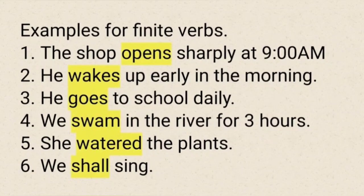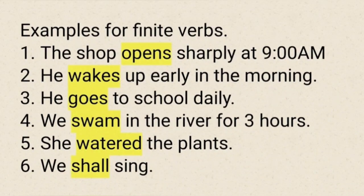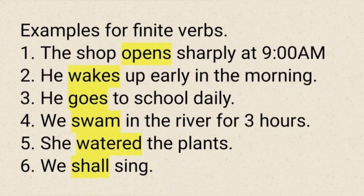See the examples for finite verbs. See the last sentence: 'we shall sing' — it's in simple future tense. When a sentence includes a modal auxiliary verb like can/could, may/might, shall/should, will/would, it is a finite verb in the sentence. The modal auxiliary verbs are considered finite verbs because they are the first verbs and immediately followed by bare infinitives. So in the last sentence, 'will' is the finite verb and 'sing' is the bare infinitive.